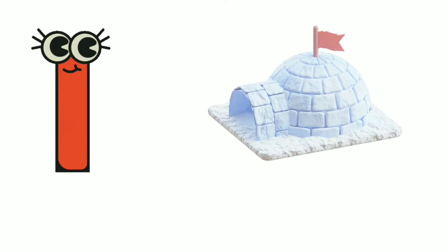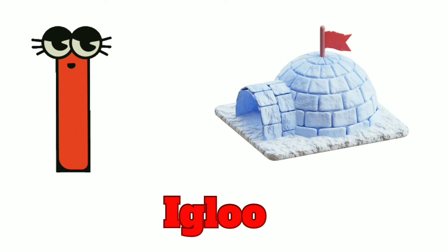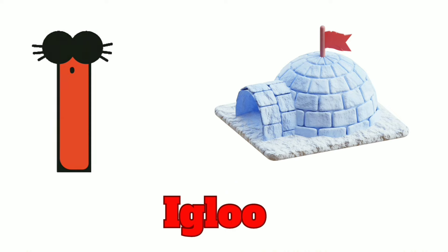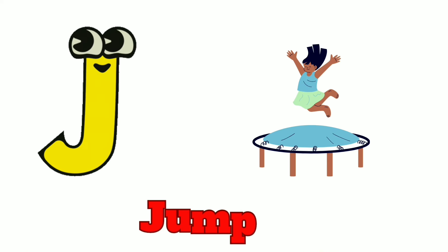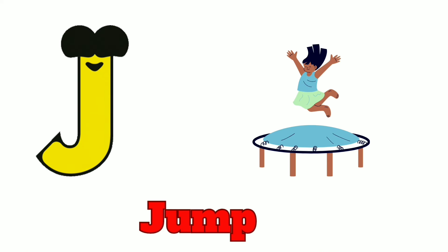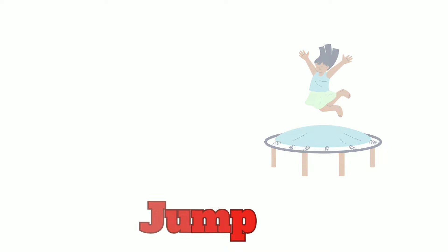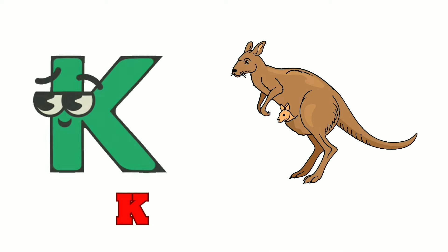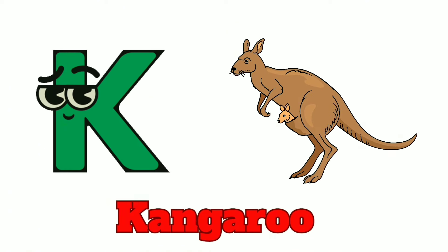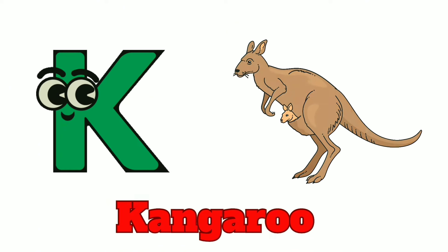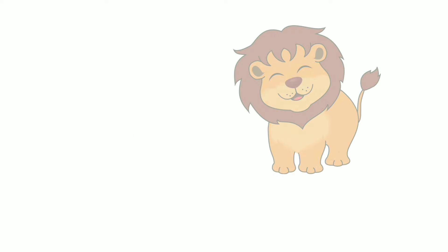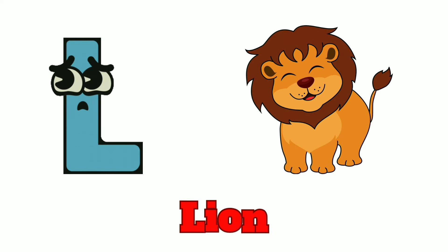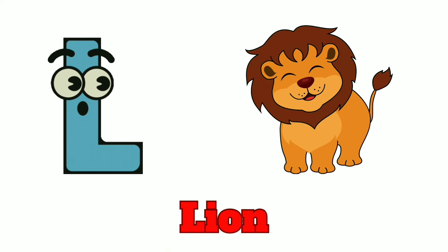I is for Igloo, I-I-Igloo. J is for Jump, J-J-Jump. K is for Kangaroo, K-K-Kangaroo. L is for Lion, L-L-Lion.